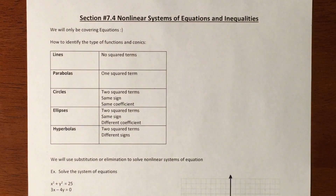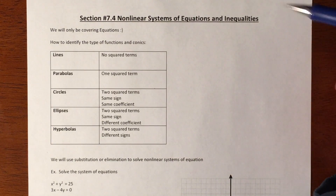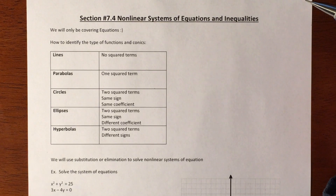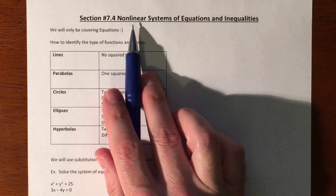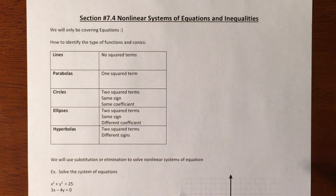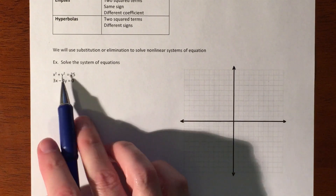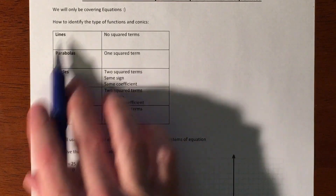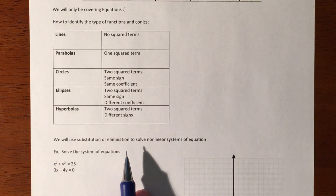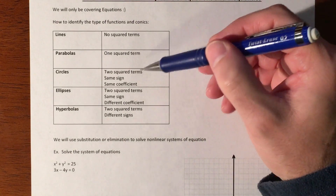In this lesson we are going to start to solve nonlinear systems of equations and potentially some inequalities. A nonlinear basically just means that you could be graphing a parabola, an x to the third, or in this instance we are going to be graphing something more along the lines of a circle with a line. Part of this is just understanding what kind of equation you have — do you recognize a linear equation versus a parabola versus a circle?